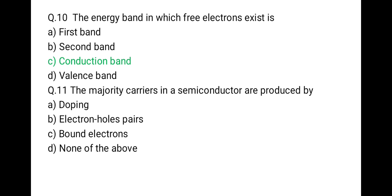The next question is: the majority carriers in a semiconductor are produced by — option one: doping; option two: electron-hole pairs; option three: bound electrons; option four: none of the above. The correct option is doping. When we dope pentavalent impurity, electrons are the majority charge carriers. When we dope trivalent impurity, holes are the majority charge carriers. So majority carriers depend on and are produced by doping.